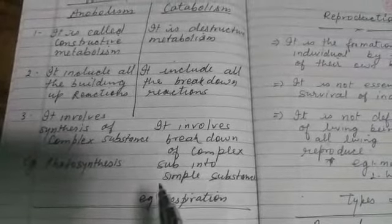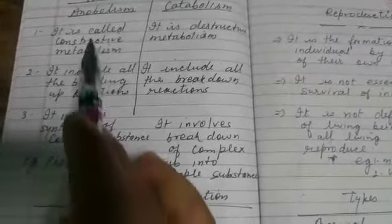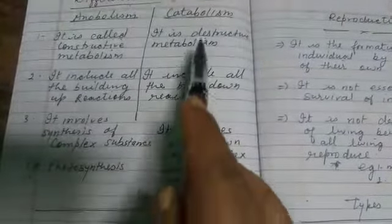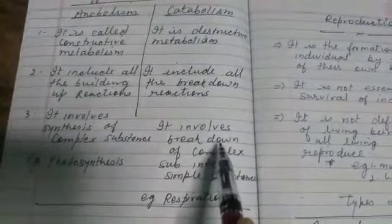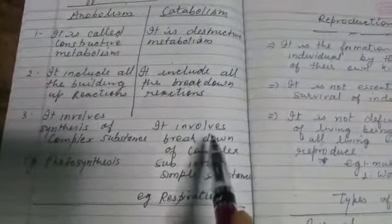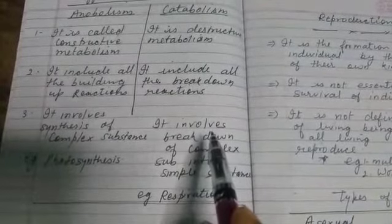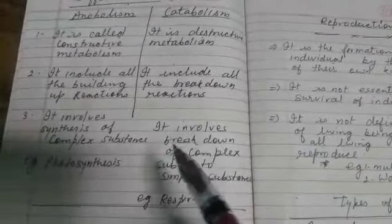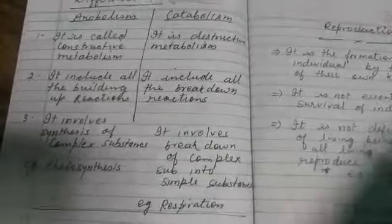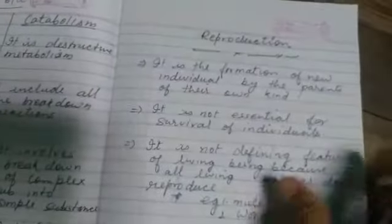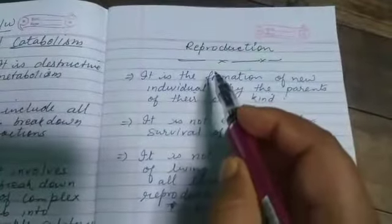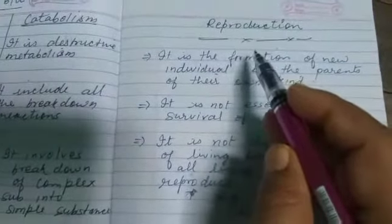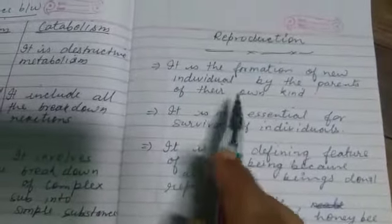In this way you can understand anabolism and catabolism. The next feature of living beings is Reproduction.